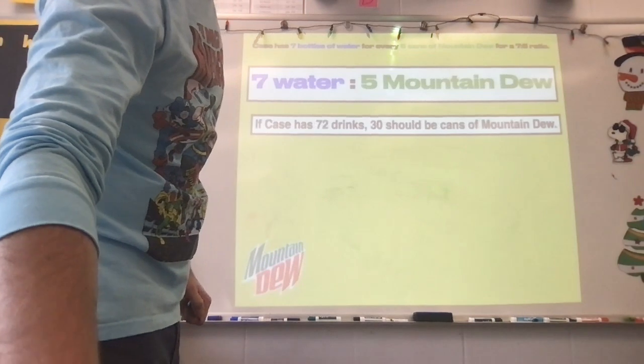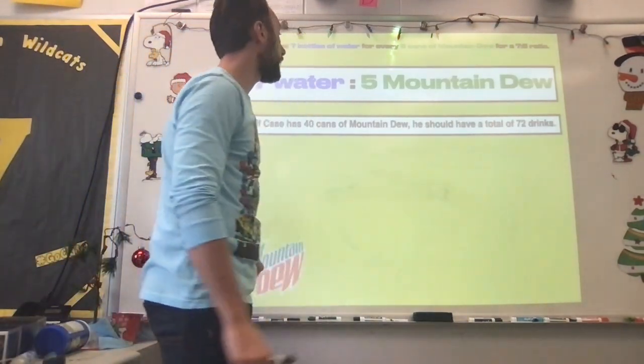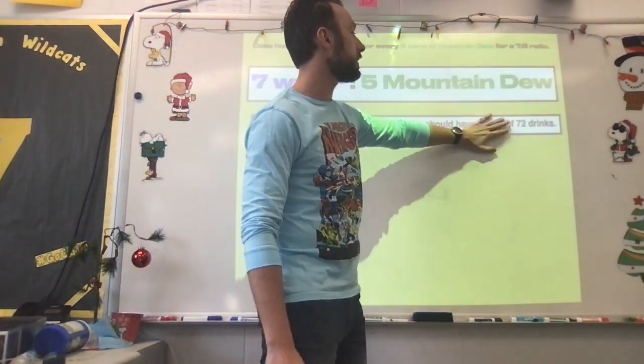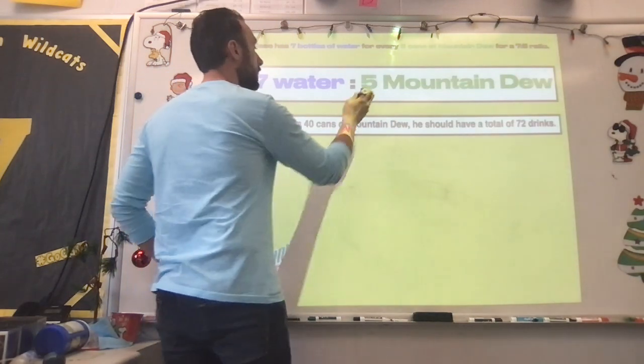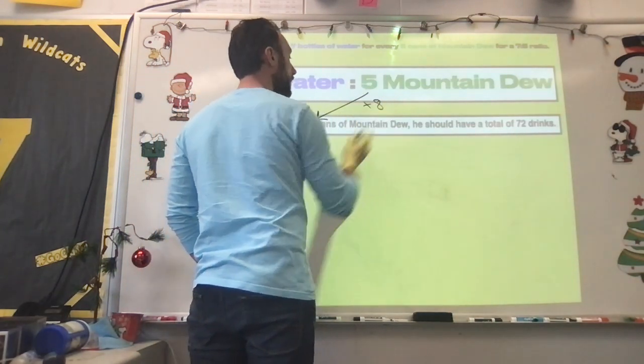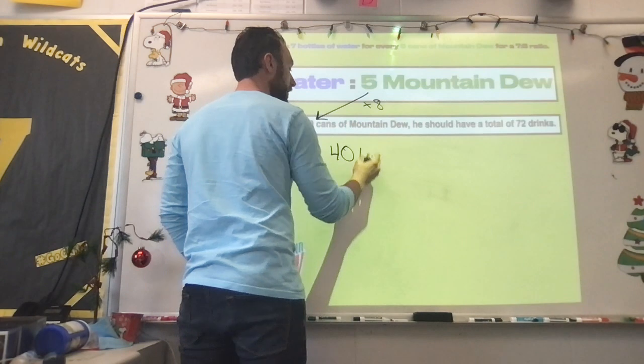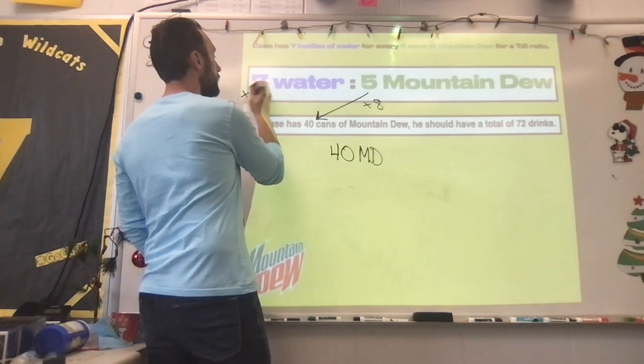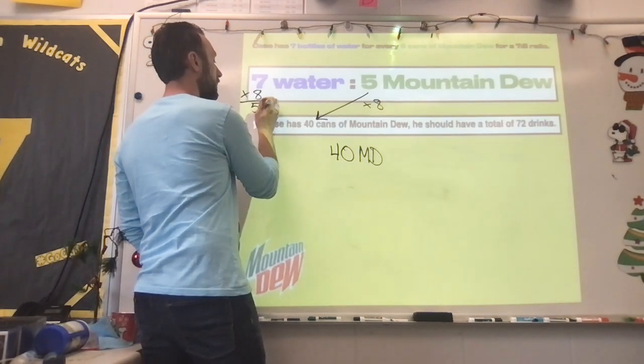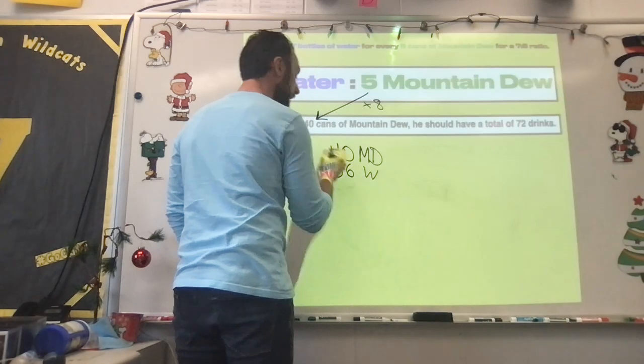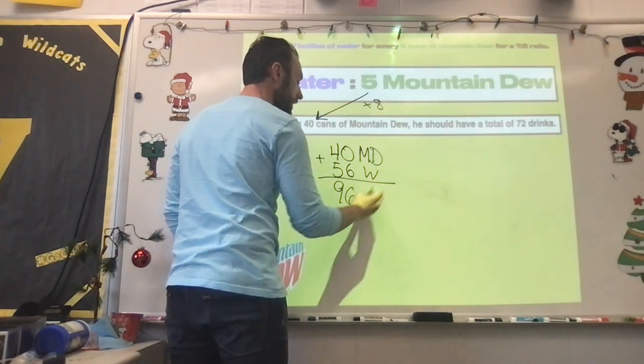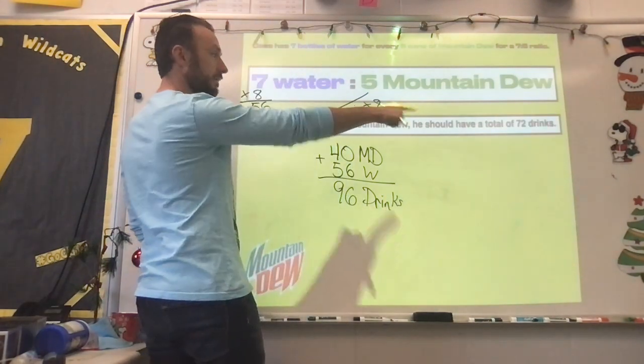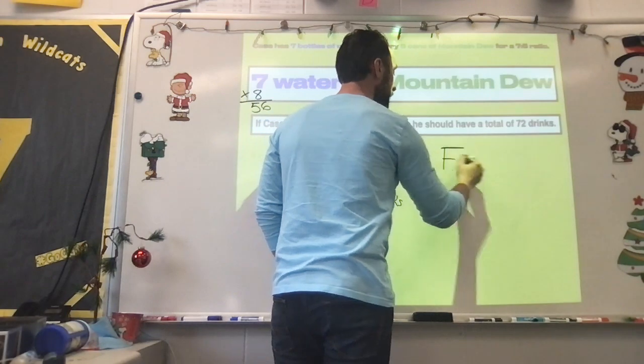And I think this might be our last one. If Case has 40 cans of Mountain Dew, he should have a total of 72 drinks. So now be careful. Mountain Dew was over here, now it's back over here. So how does five become 40? I'm going to multiply it by eight, which gives me a total of 40 cans of Mountain Dew. For the equivalent ratio, we must multiply both numbers by the same factor. So we'll do seven times eight to get 56 bottles of water. Add those together, that leaves me with 96 drinks. And that is not the 72 drinks I said it should be, so this would be a false statement.